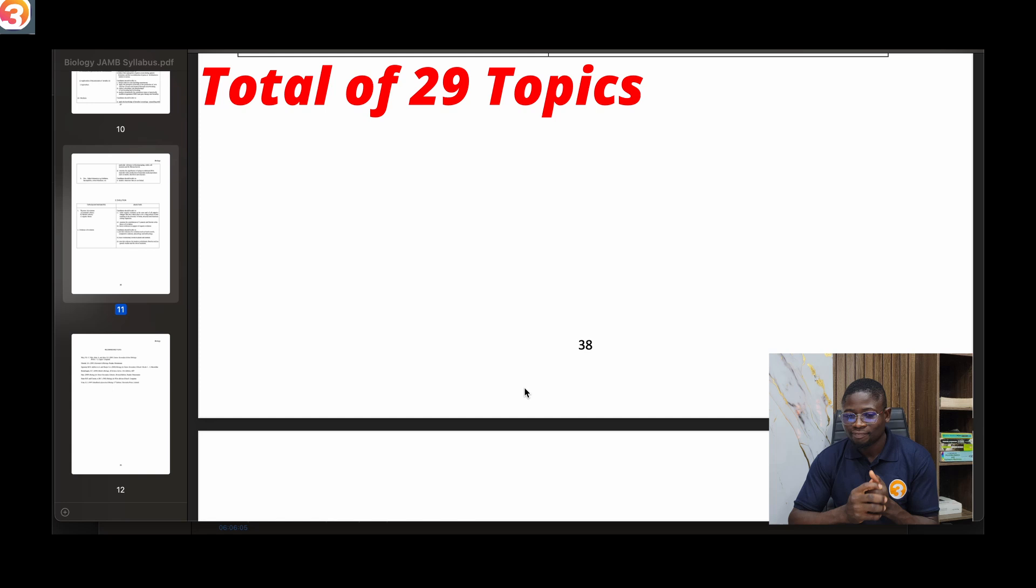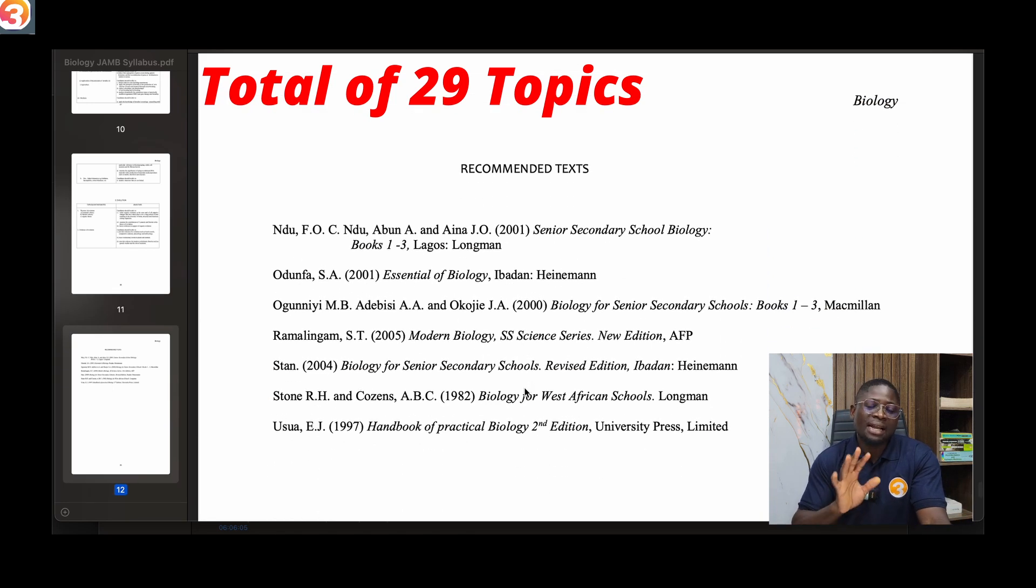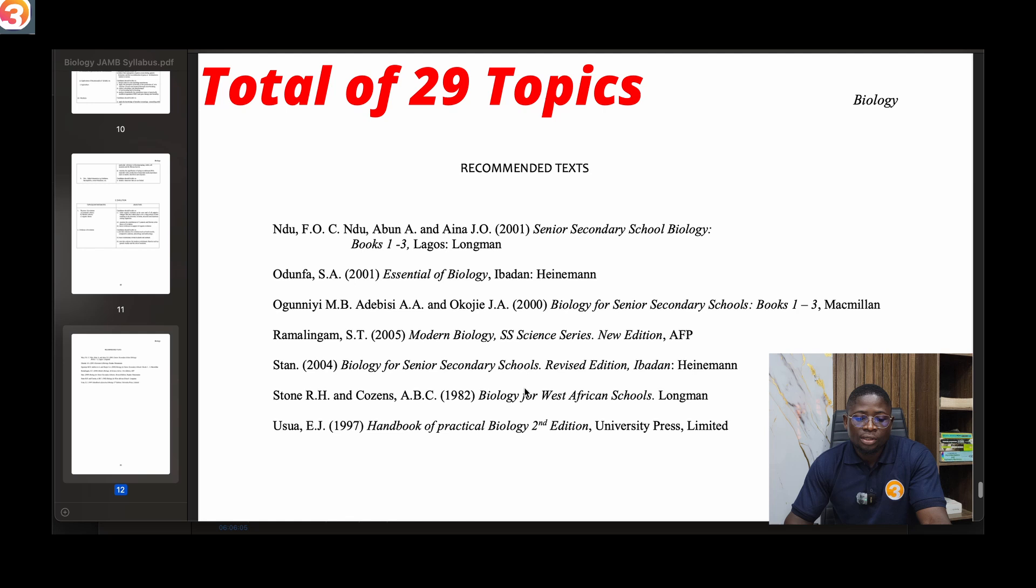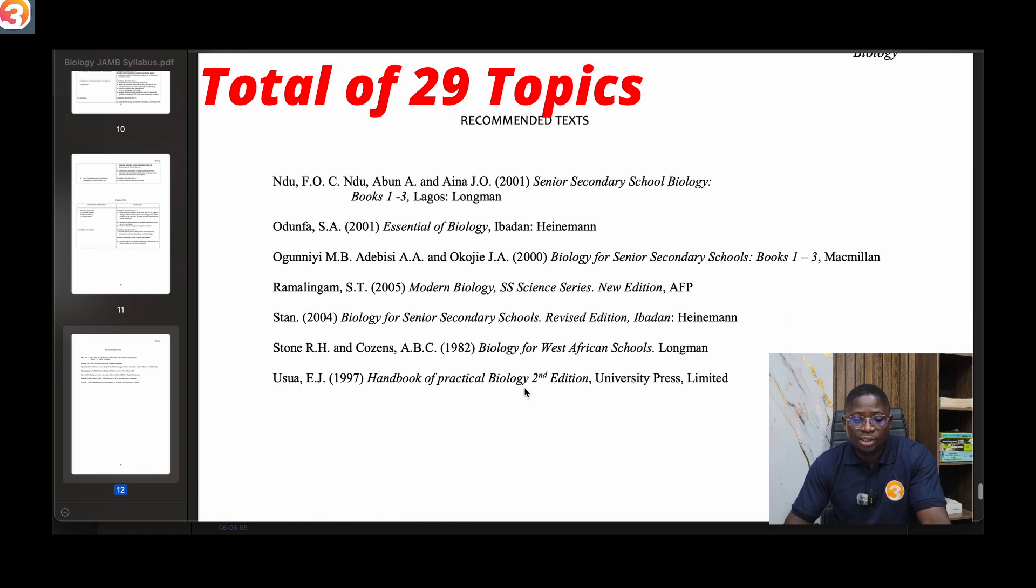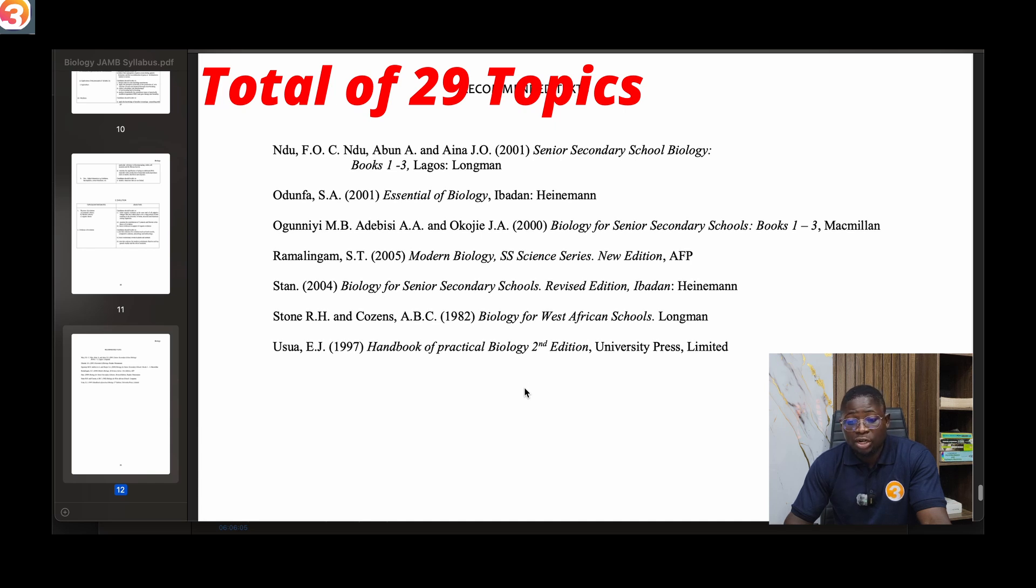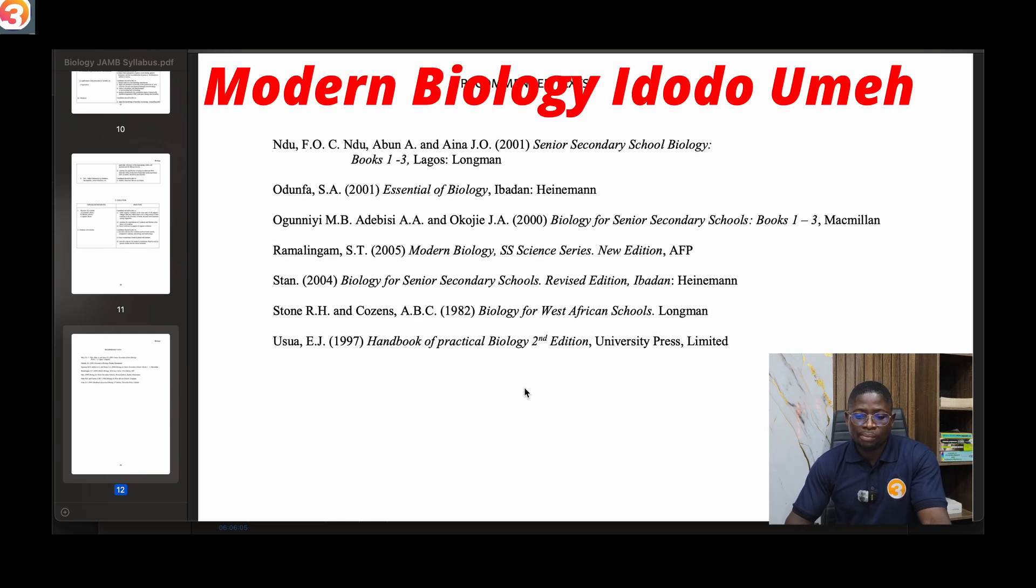Recommended texts by JAMB - texts that you can actually get most of these topics from. We have Ndu, F.O.C., Ndu, Abun and Aina, J.O. (2001) Senior Secondary School Biology books one to three. We have Odunfa (2001) Essential Biology. We have Oguni, M.B., Adedoyin, and Okojie, J.A. Biology for Senior Secondary Schools book one to three, Macmillan. Modern Biology, Ramalingam. Stan Biology for Senior Secondary Schools revised edition, Biology for West African Schools. Uswa Handbook of Practical Biology. I'm going to add one - Modern Biology by Udodo Ume. And then we have a lot of tutorials related to biology on the O3 schools channel on YouTube and Olabitan God on Facebook.